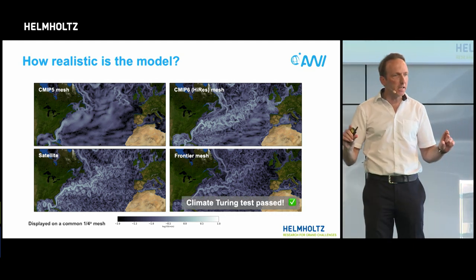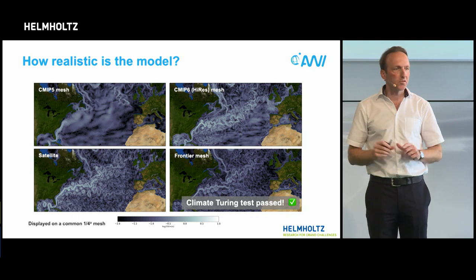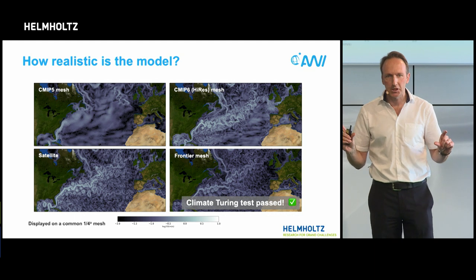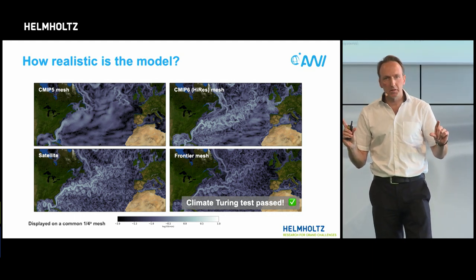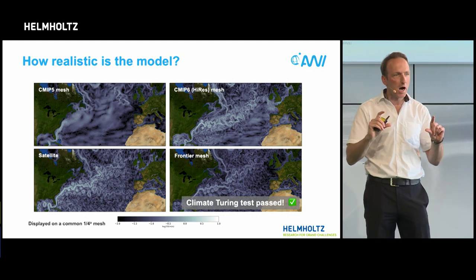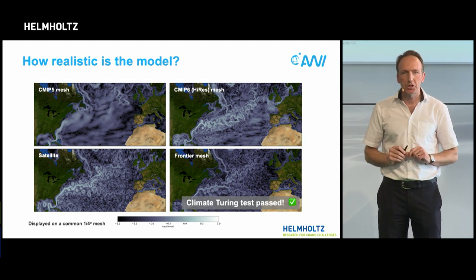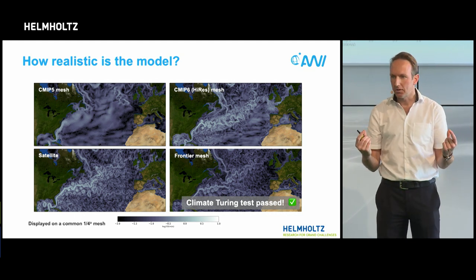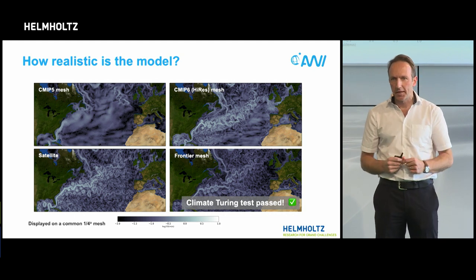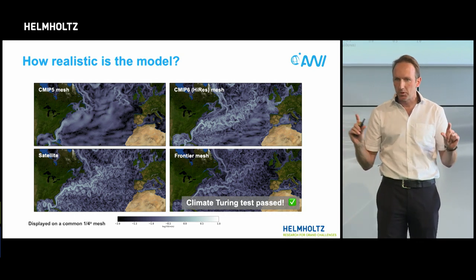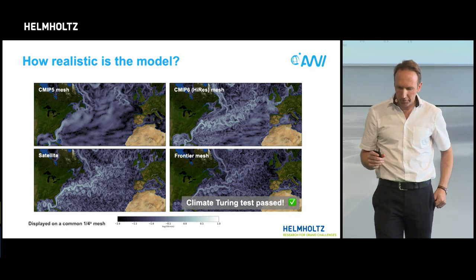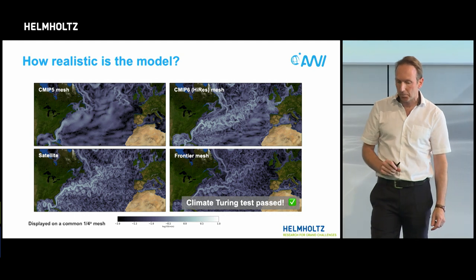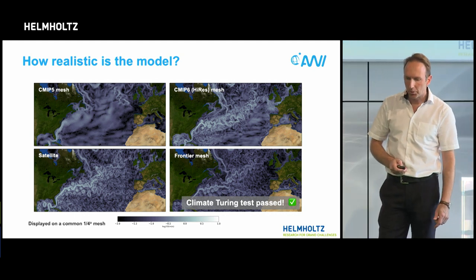We can even say that these kinds of models start to pass what some people call the climate Turing test. Turing addressed how you can tell how smart artificial intelligence is: you take a machine and a person, ask them questions, and if you can't tell their answers apart, you judge how smart they are. Tim Palmer took this concept forward and said our models need to pass this Turing test as a necessary condition. I think we are getting there — that is the point I want to make.